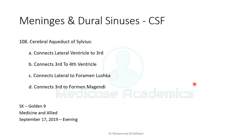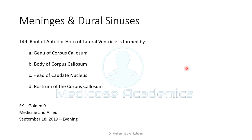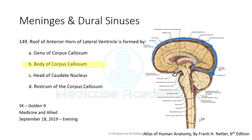The cerebral aqueduct of Sylvius connects the third ventricle to the fourth ventricle. It has the most frequent occurrence of congenital stenosis and is the most frequent cause of congenital hydrocephalus. The roof of the anterior horn of the lateral ventricle is formed by the body of the corpus callosum. For reference, the anterior horn is laterally related to the caudate nucleus and medially related to the septum pellucidum.